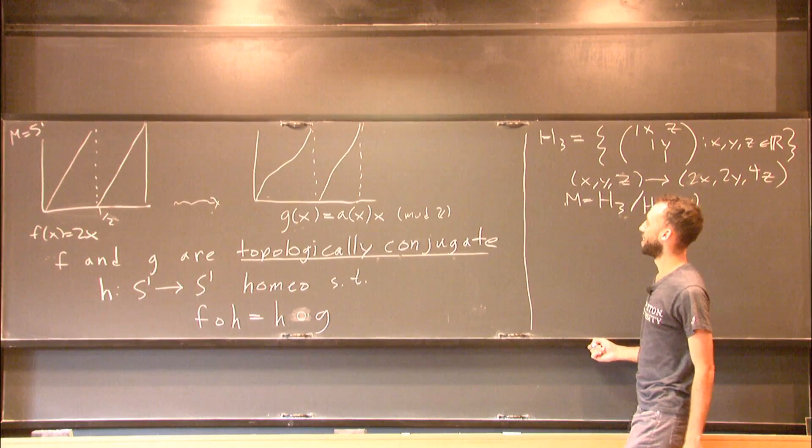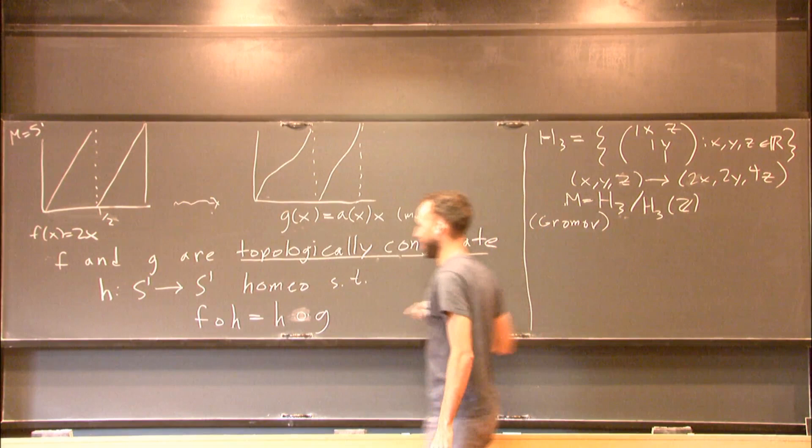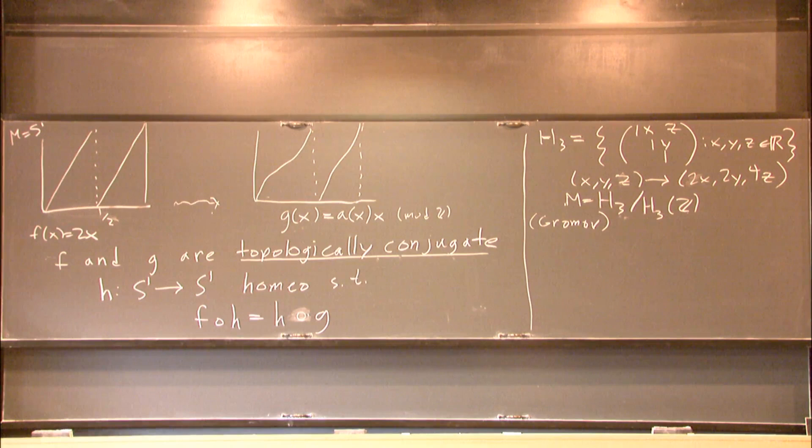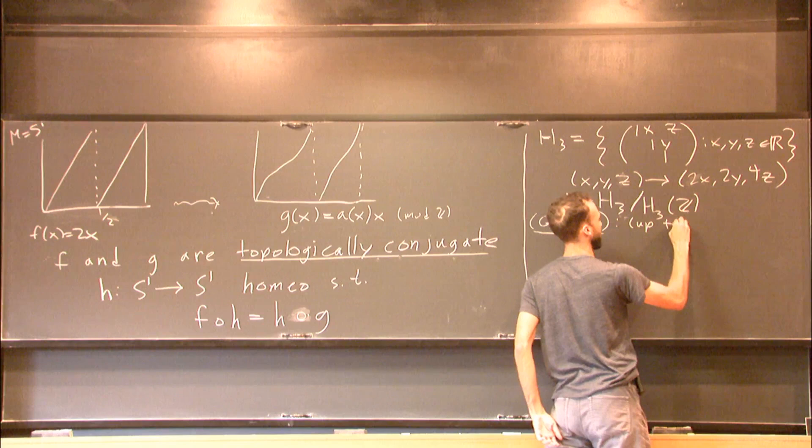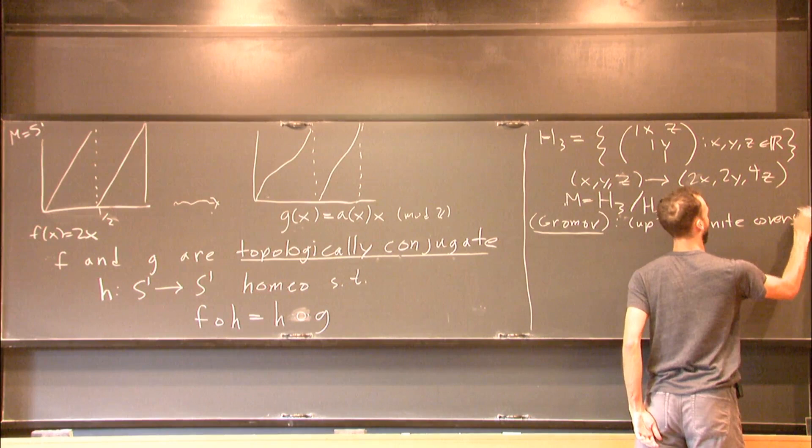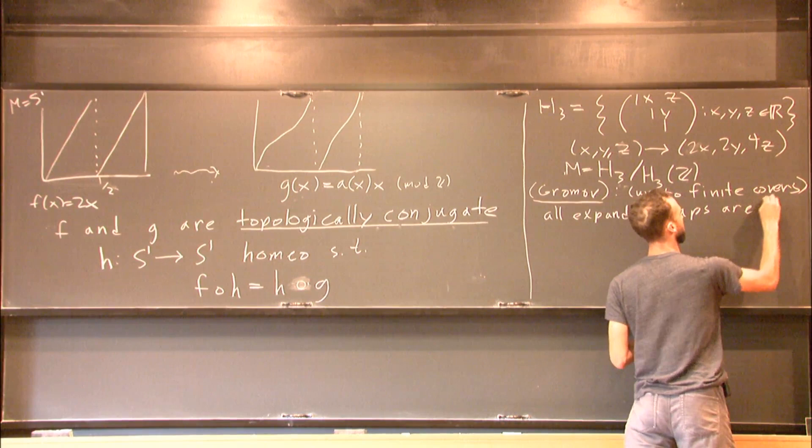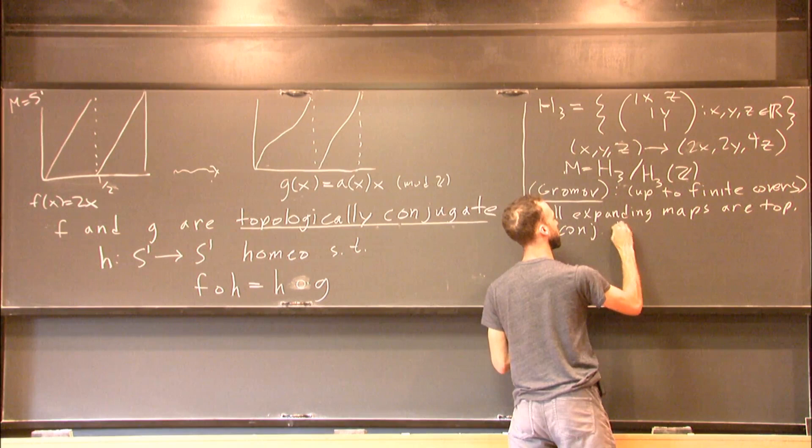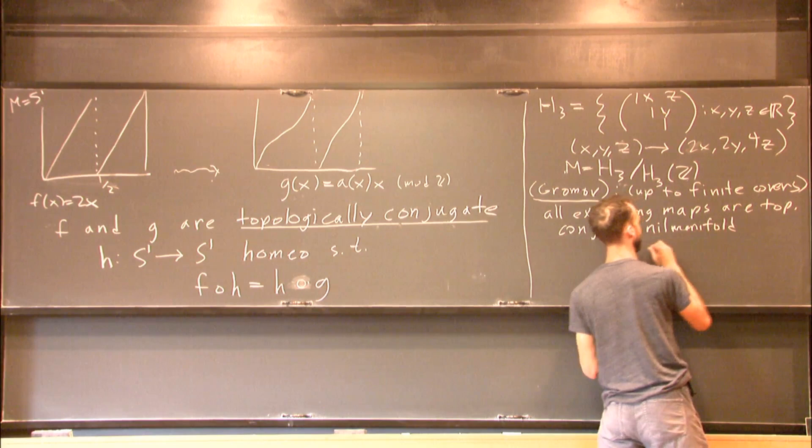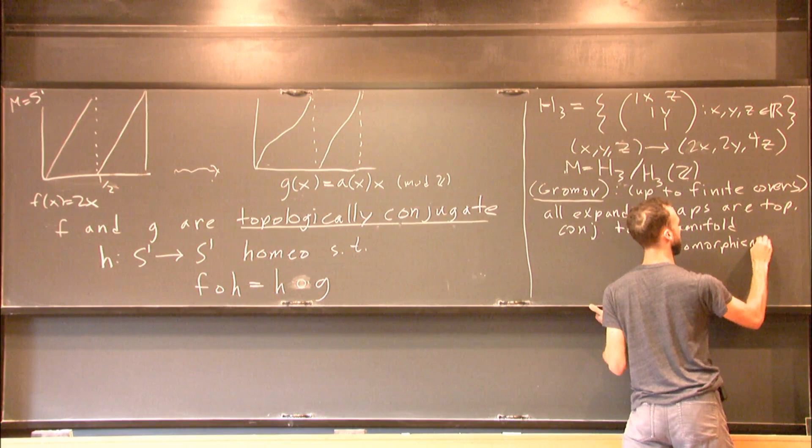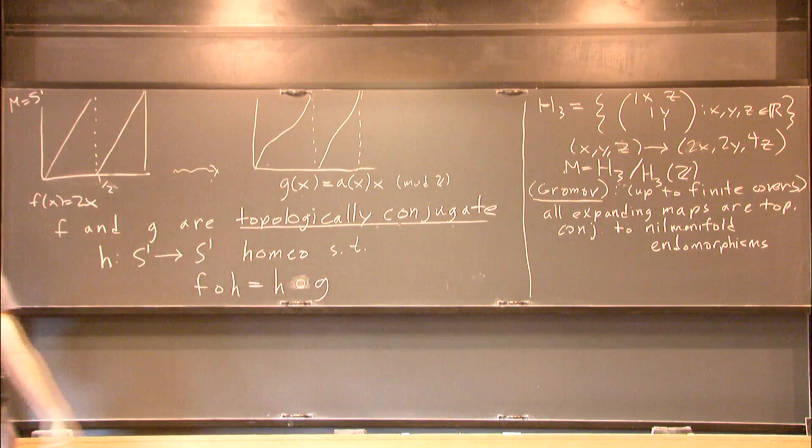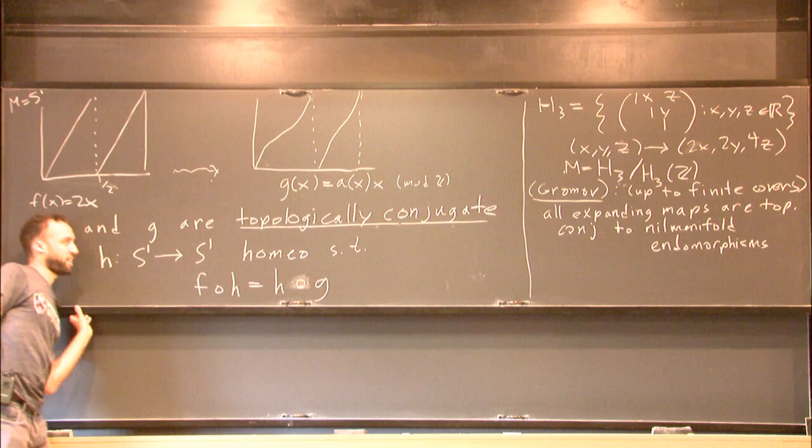But the beautiful answer to this question is that once you've got it in your head, OK, I've got tori. I've got nilmanifolds. Gromov tells us from his wonderful polynomial growth theorem up to finite covers, all expanding maps are topologically conjugate to nilmanifold endomorphisms.